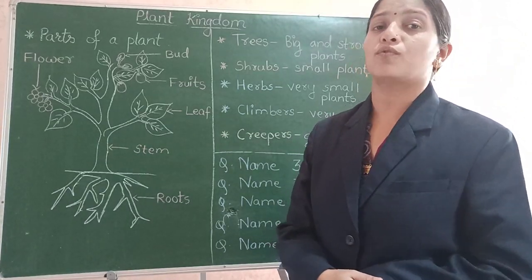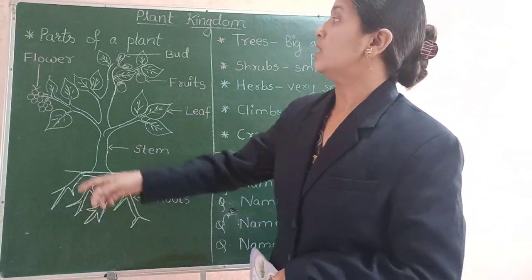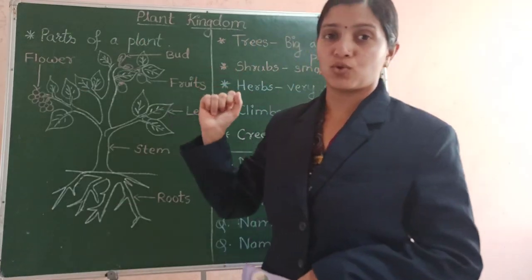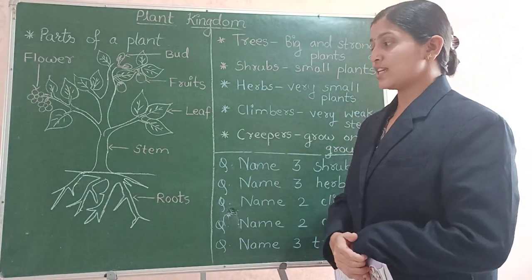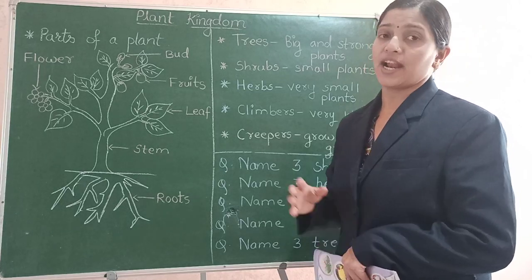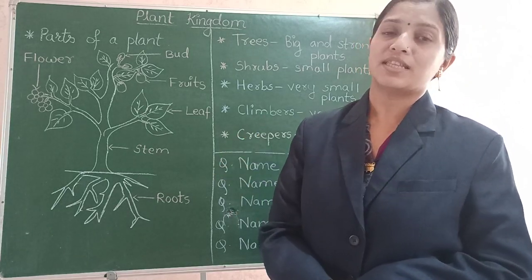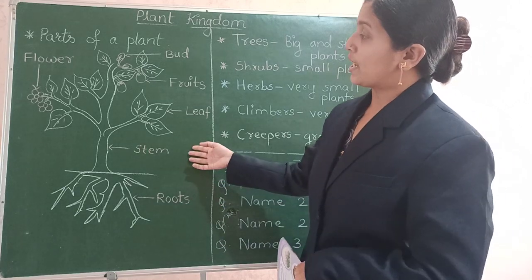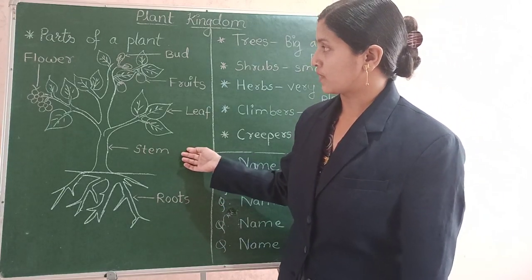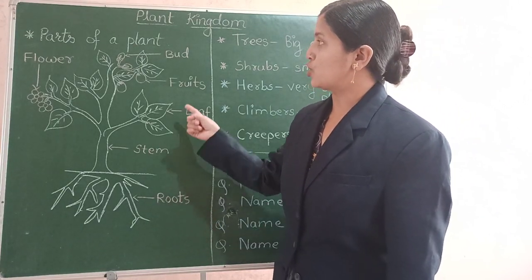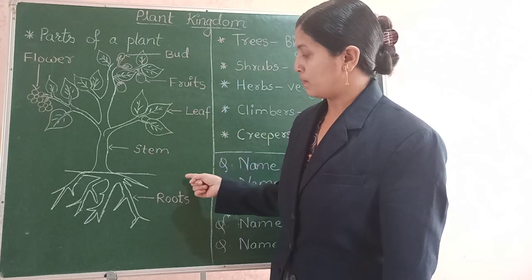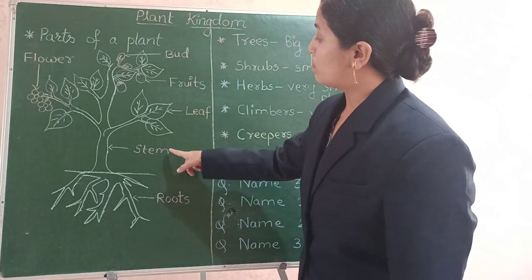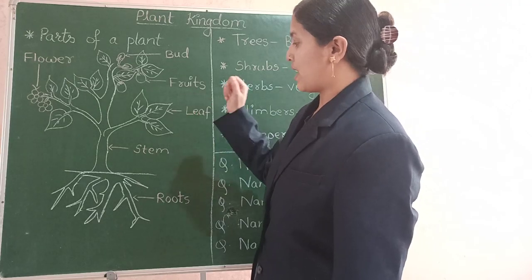We are also going to learn about the parts of a plant. A plant has six parts and we are going to learn about these parts. Now can you see this picture? Yes, it is the picture of a plant. I have also marked the parts of this plant.